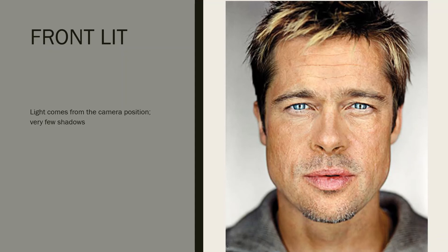First we're going to talk about front-lit light. This is when the light comes from the same position as the camera and allows for very few shadows on the subject's face. The light is basically right in front of the subject so that they're staring straight into it. That's how you get these illuminated eyes. To demonstrate with the flashlight on my phone, this is front-lit.